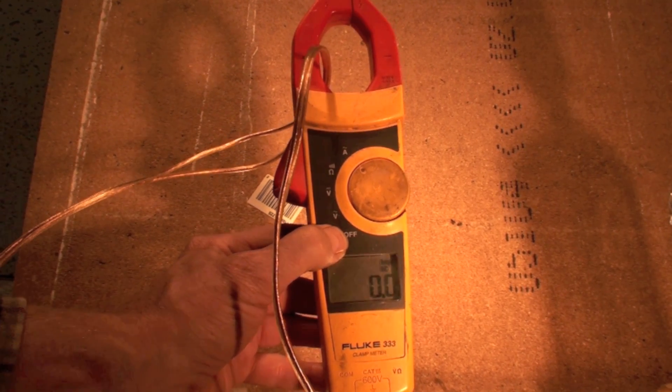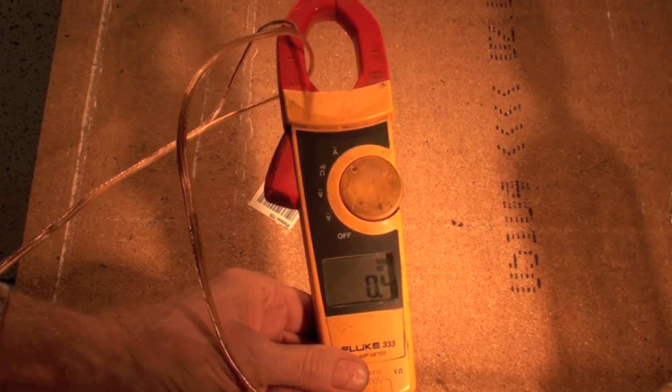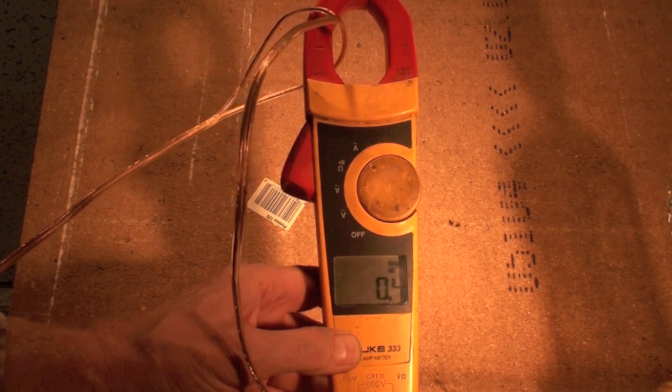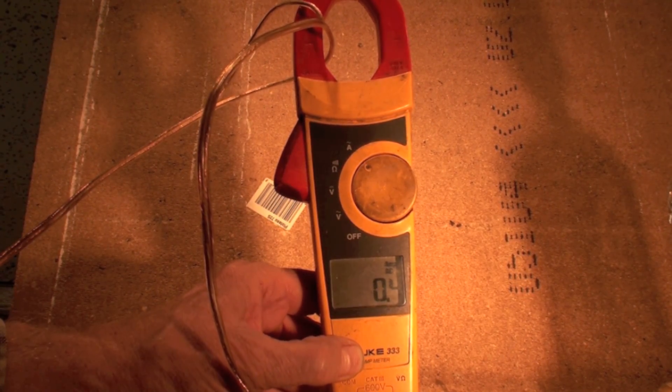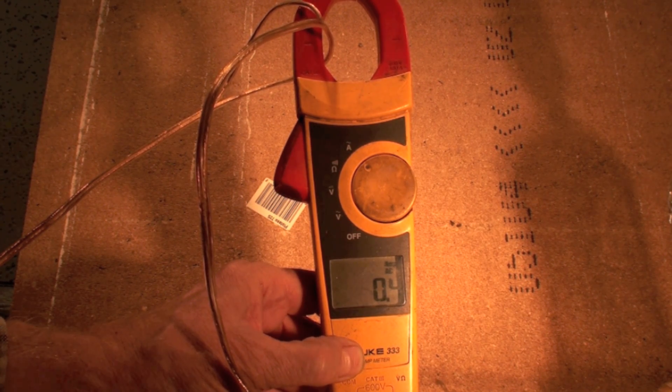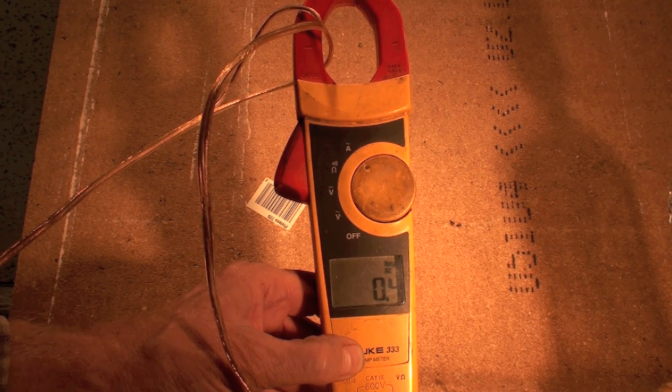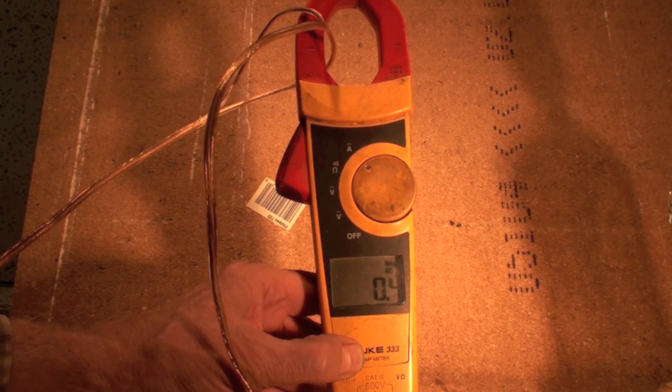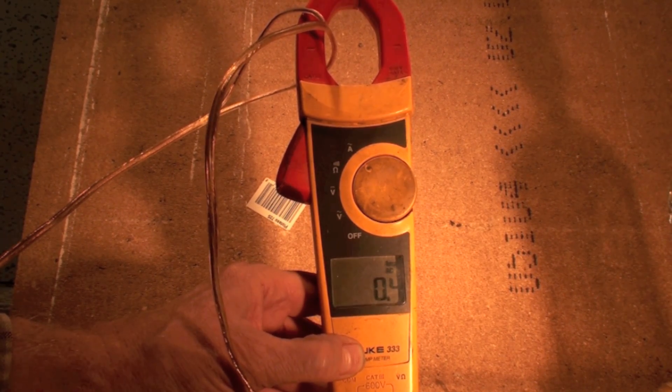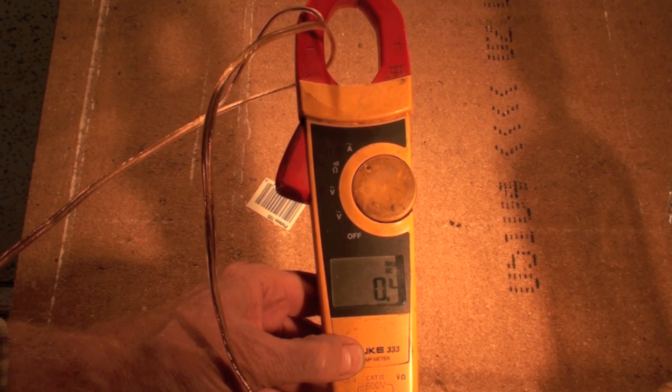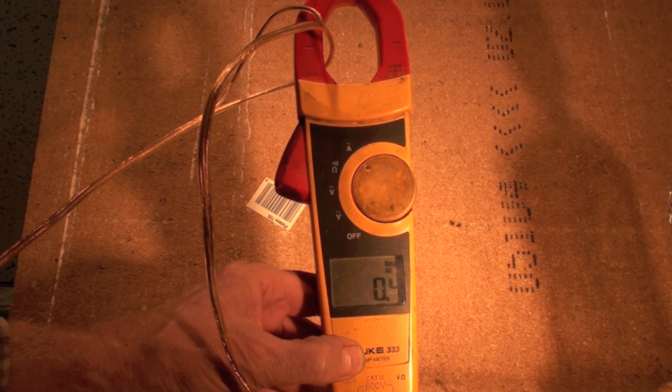These clamp meters - this one's 400 amps and 600 volts - so this will do up to 400 amps. This is what we mostly do our amperage readings with because it's so fast. I don't have to take anything apart, I don't have to put the meter in series with it or anything like that. This is the one I get out first, and I can do most of my readings with it. And I'm going to clamp circuits like this to find out if they're actually working.